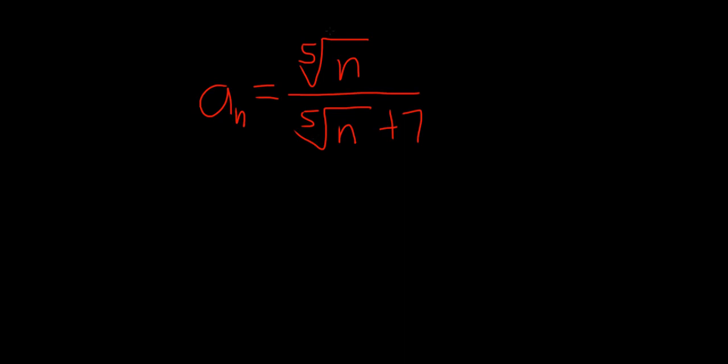Right away, you can see that the growth rates are the same. In the numerator, you have a fifth root. In the denominator, you have a fifth root. So these both grow pretty much at the same rate.